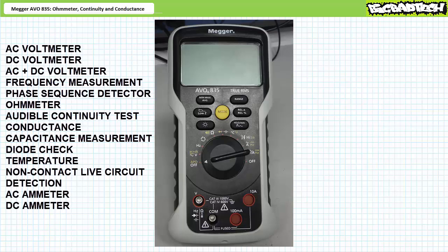Today we'll take a brief introductory tour of the Megger AVO835 and briefly examine the resistance, continuity test, and conductance measurement functions.